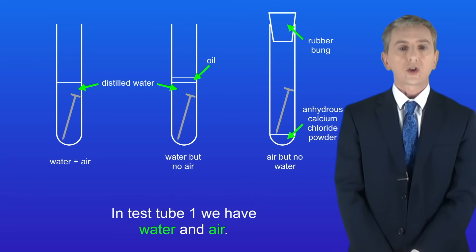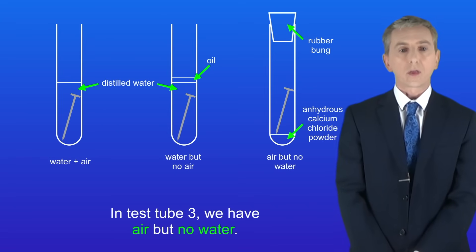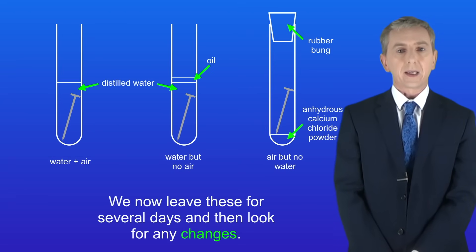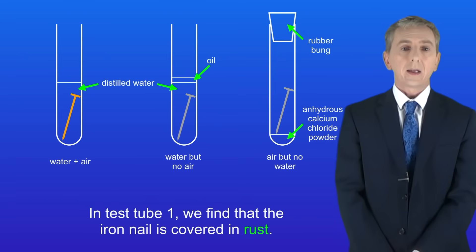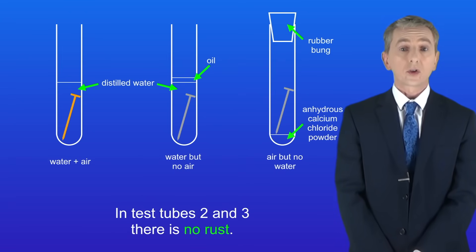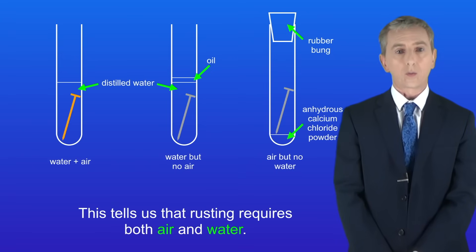To summarise: in test tube one we've got water and air; in test tube two we've got water but no air; and in test tube three we've got air but no water. We leave these for several days and then look for any changes. In test tube one we find that the iron nail is covered in rust. In test tubes two and three there's no rust, and this tells us that rusting requires both air and water.